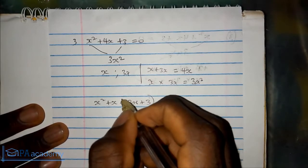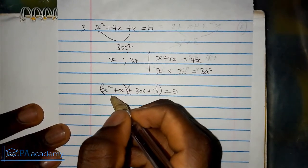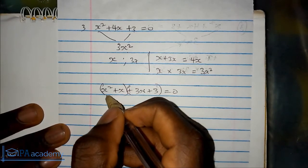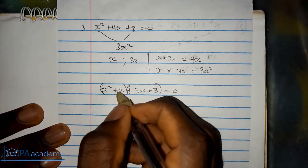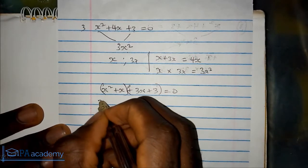Now let's bracket in two. For the first bracket, we look for a value that is similar to the two values inside the bracket. The number here is x, x is common.